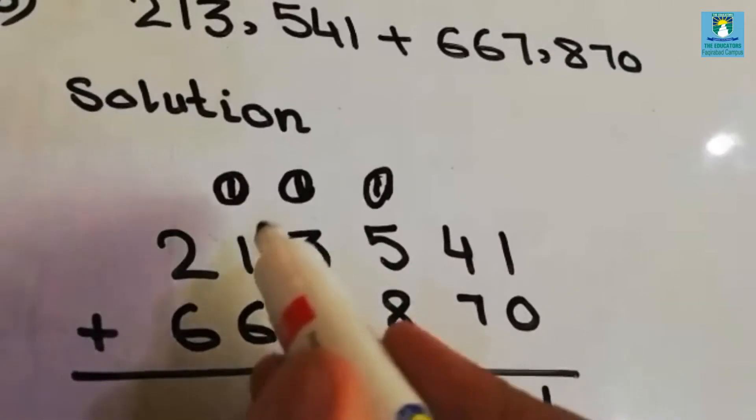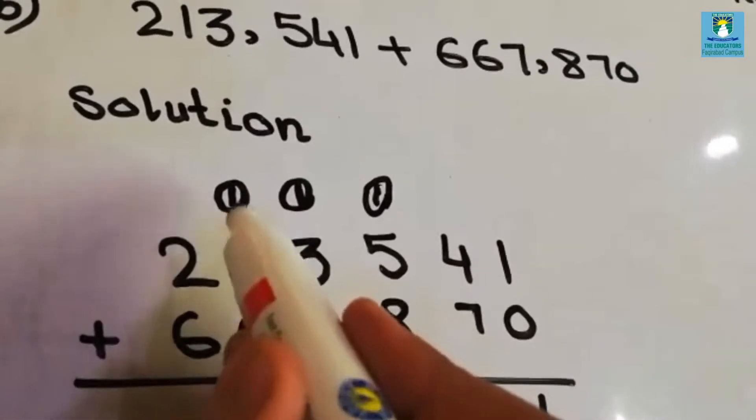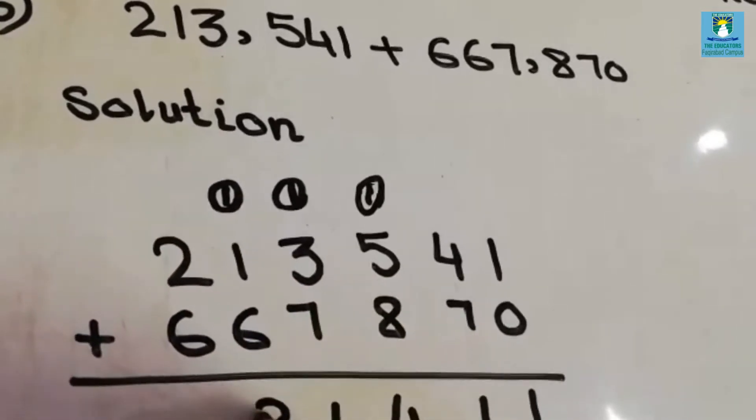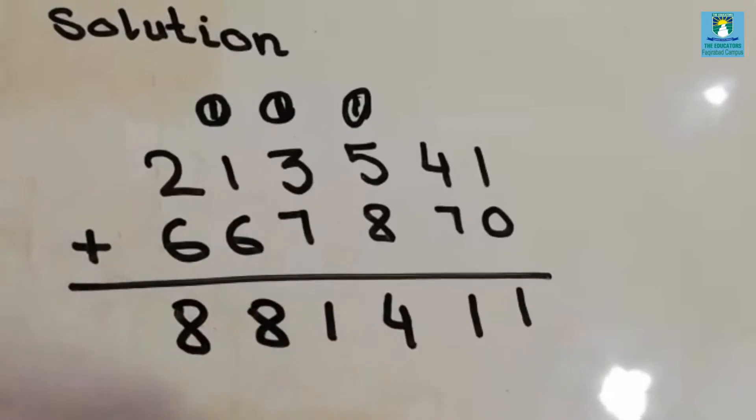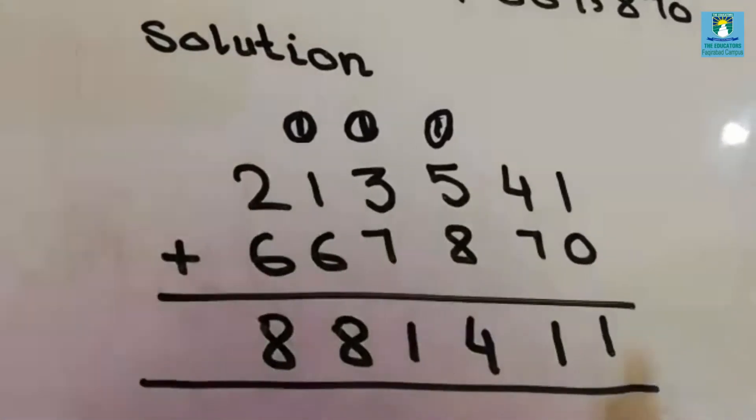6 plus 1 is 7, 7 plus 1 is 8. 6 plus 2 is 8. So it will be your answer.